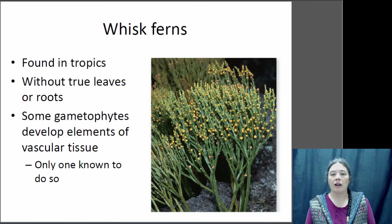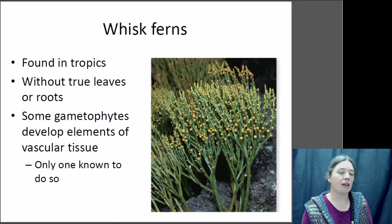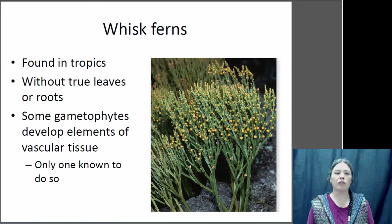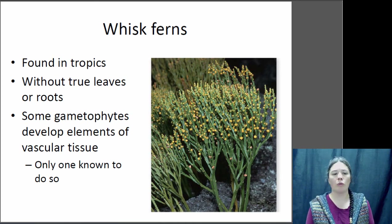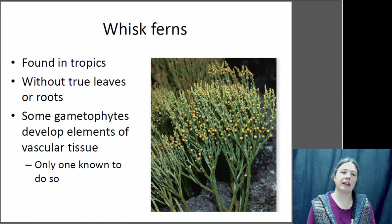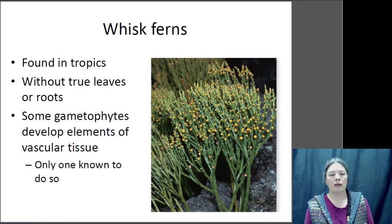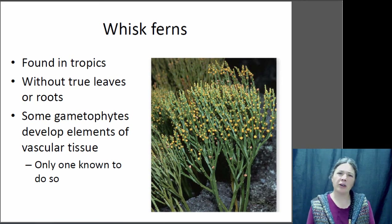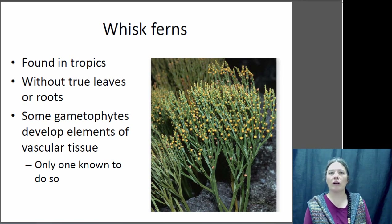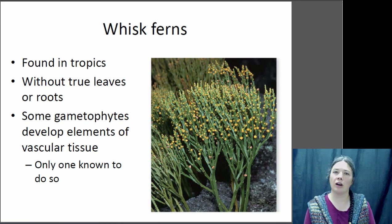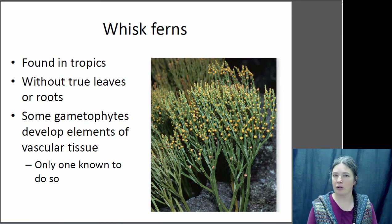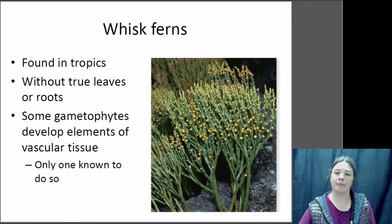Moving into the pterophytes: whisk ferns are a kind of weird group. They don't have any true leaves or roots — they're just little photosynthetic sticks. They're mostly found in the tropics, and some whisk fern gametophytes actually have vascular tissue, making them the only gametophyte known to have vascular tissue, which is pretty cool.